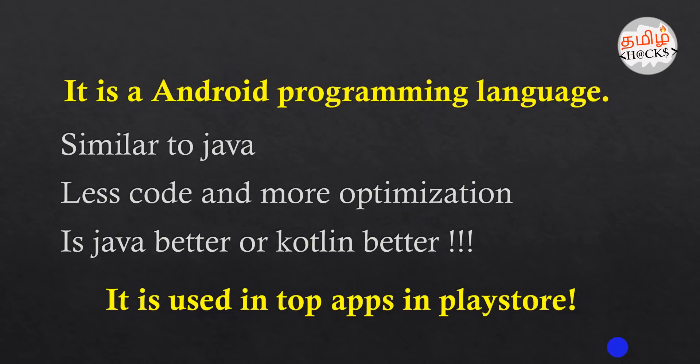Kotlin is a programming language we can use for Android apps. We can also use Java as a programming language, or we can use C++ code. But Java is used about 90%, and now Kotlin is also used as a programming language.